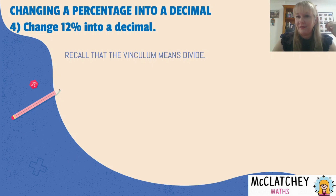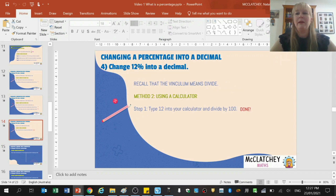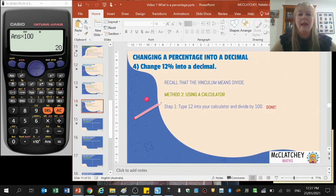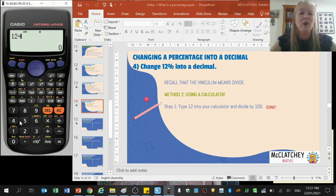There's another way of doing this — not just moving decimal points. Recalling that the vinculum means divide, we can do this on our calculators. Clear the screen, type 12 — it's 12%, meaning 12 out of 100, so 12 divided by 100 — press equals, and we get 0.12 right away.